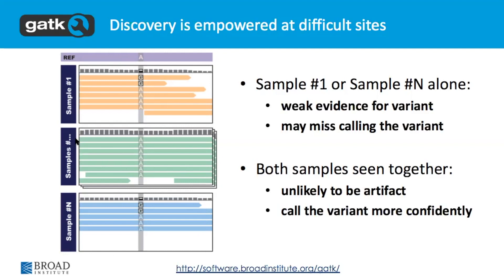The basic idea of why having multiple samples helps you call variants is summarized here. Suppose you just have a single sample on top, and it has pretty low coverage, and you got a few reads that support your variant, but you're not quite sure whether it's some sort of bias - maybe a strand bias where all of the bases on one strand at that position turn out to be G's. However, if you have multiple samples, you can see that across all the samples the allele fraction actually gives you a better sense that the variant in sample A is true.